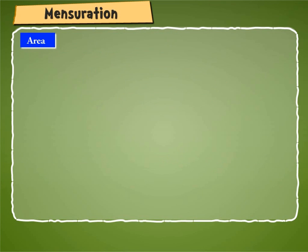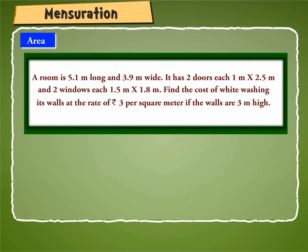Let us understand this with the help of an example. Suppose a room is 5.1 meter long and 3.9 meter wide. It has two doors each 1 meter by 2.5 meter and two windows each 1.5 meter by 1.8 meter. Find the cost of whitewashing its walls at the rate of rupees 3 per square meter if the walls are 3 meter high.